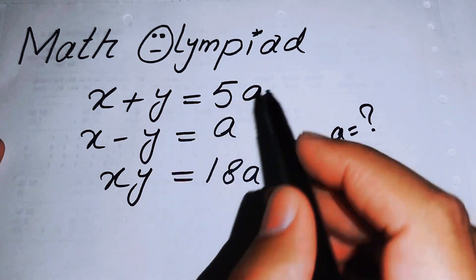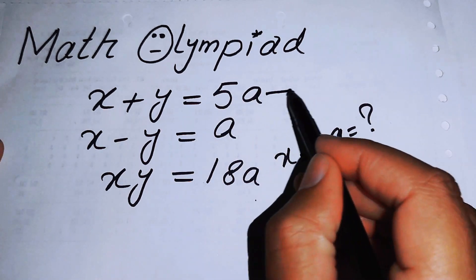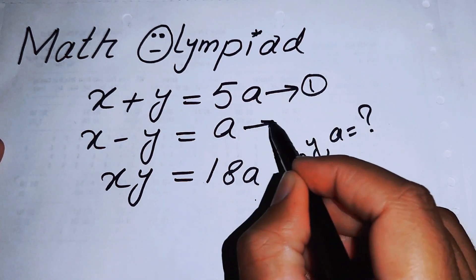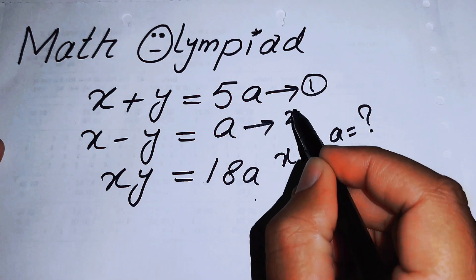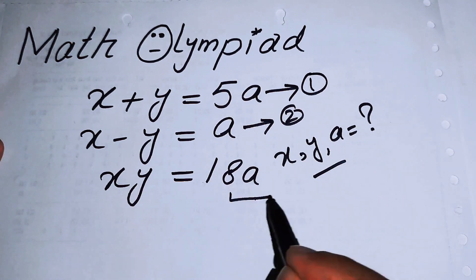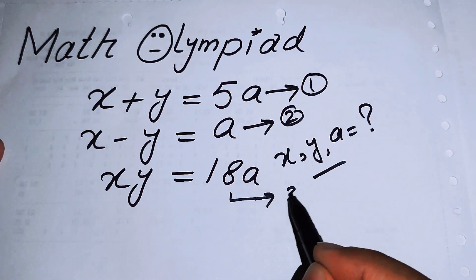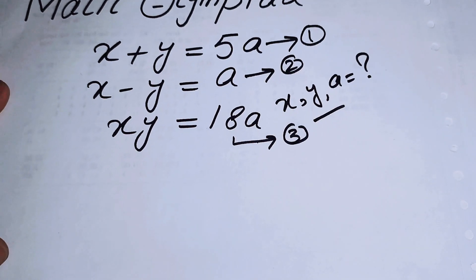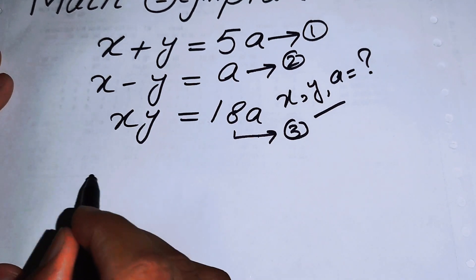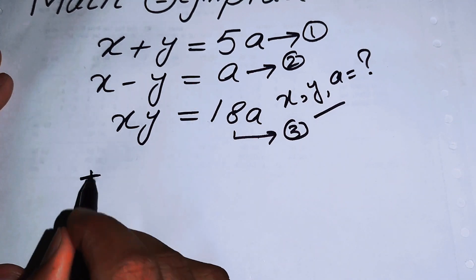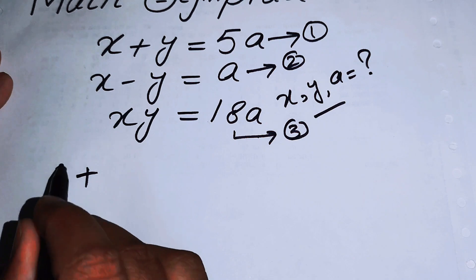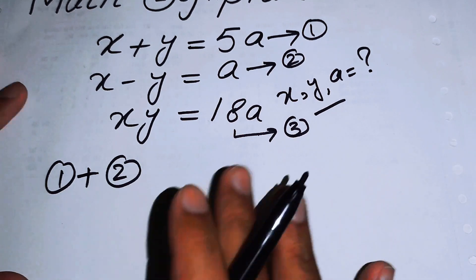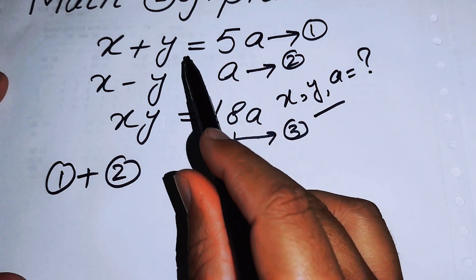We will label these as equation number one, equation number two, and equation number three. The very first thing we are going to do is add equation number one and equation number two.